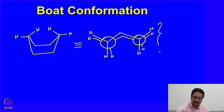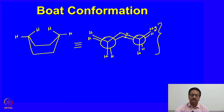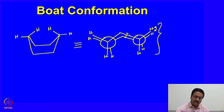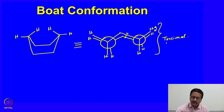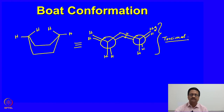This molecule has eclipsed methyl groups and eclipsed hydrogen atoms, which is equivalent to n-butane in the fully eclipsed conformation. So it has a significant amount of torsional strain compared to the chair conformation of cyclohexane, which does not have this torsional strain.